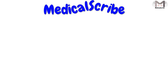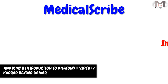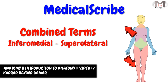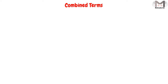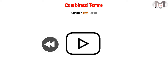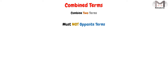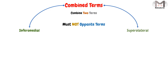Hi guys and welcome back to Medical Subscribe. In this video we will talk about the combined terms, and specifically we will talk about the inferomedial and the superlateral terms. In the previous videos we knew how to categorize the anatomical terms, and we said there are a type of terms we call the combined terms. These combined terms are a wide range of terms that combine between two terms as explained in the previous videos, but these terms must not be opposite terms. The most used terms in this group are the inferomedial and the superlateral terms.